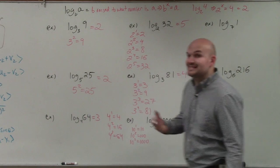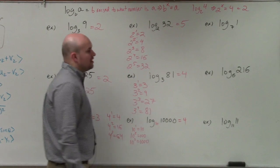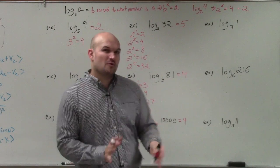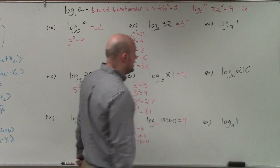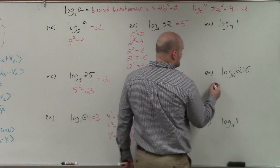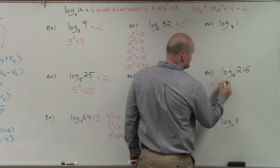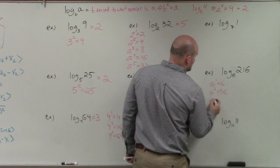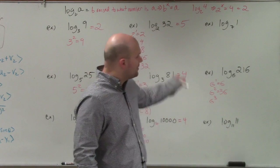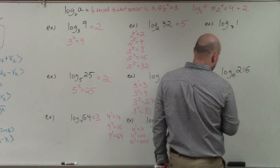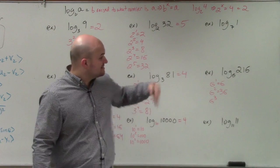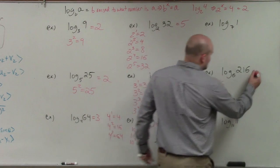Here I have log base 6 of 216. I don't always remember 6's — I tend to stick with 2's, 3's, 4's, and 5's as the most common. Let's list: 6 to the first power is 6, 6 squared is 36, 6 cubed — I don't know off the top of my head, but if you type it in your calculator, it's 216. So 6 raised to what power gives you 216? That is 3.